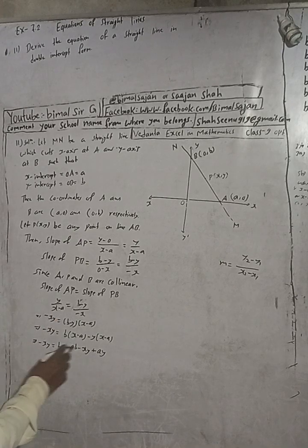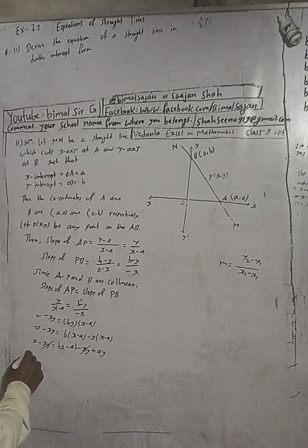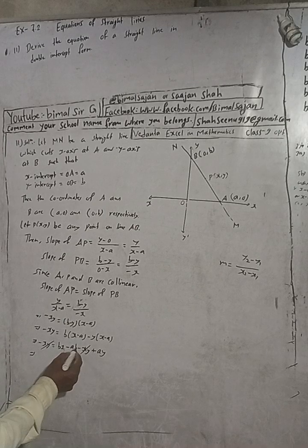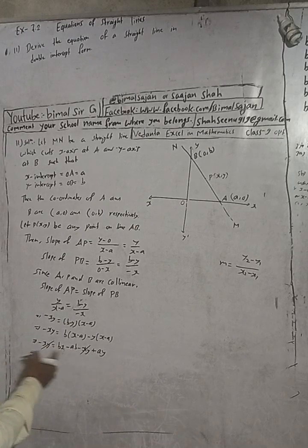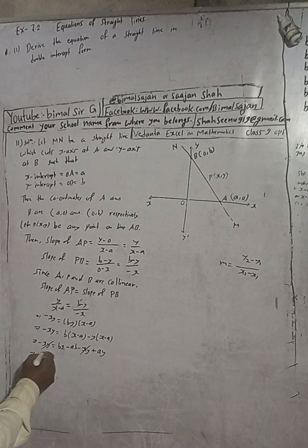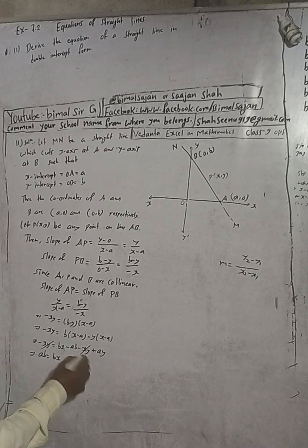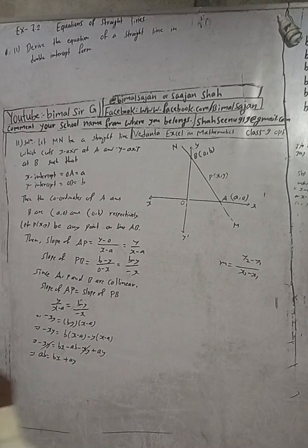The negative xy and the xy cancel out, leaving nothing on that side. So we have: ab equals bx plus ay. Now we divide both sides by ab.